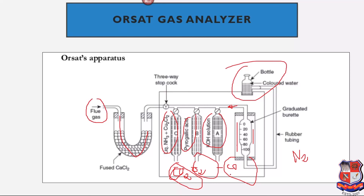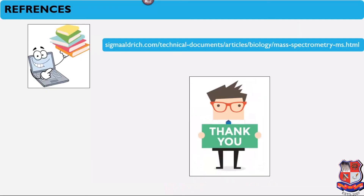From the results, we can determine combustion quality: if combustion is incomplete, the CO content will be high; if there is excess oxygen, the O2 value will be higher; and with complete combustion, the CO2 value will be higher. This is the Orsat gas analyzer, used to analyze the composition of flue gases — specifically CO, CO2, O2, and N2. Thank you for watching.